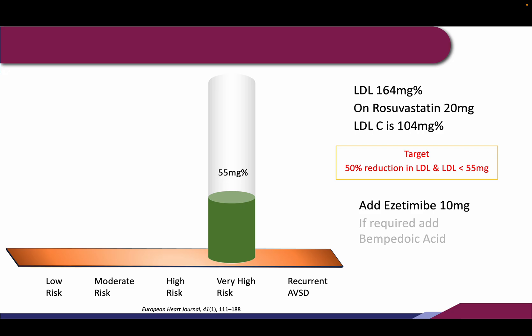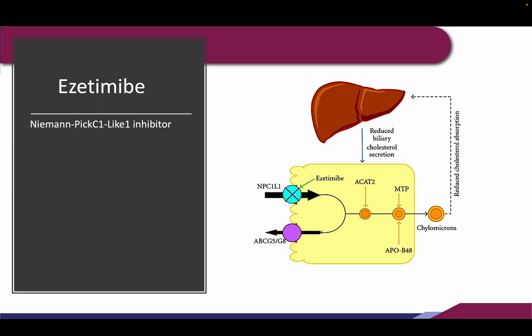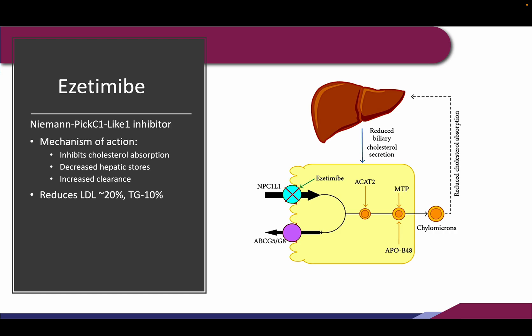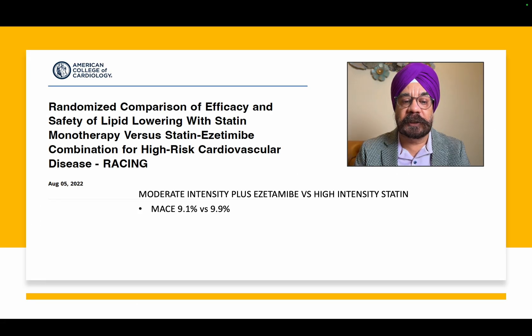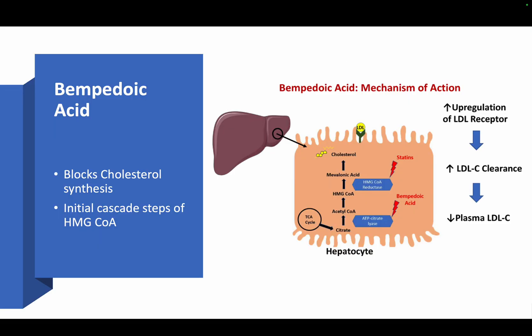We can increase to 40 mg and then add ezetimibe, which would get LDL down by about another 13 to 14 percent. If required, we can also add bempedoic acid. Ezetimibe is an inhibitor of cholesterol absorption at its receptor, reduces LDL by about 20 percent alone, and also increases HDL. It is very well tolerated and can be added with a statin, with many trials proving it works well. Bempedoic acid is another molecule that blocks cholesterol synthesis.